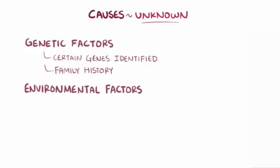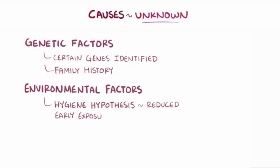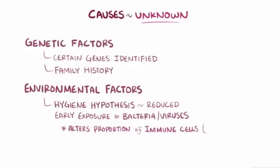For environmental factors, there's the hygiene hypothesis, which suggests that reduced early immune system exposure to bacteria and viruses might actually increase the risk of later developing asthma, possibly by altering the overall proportion of immune cell subtypes.